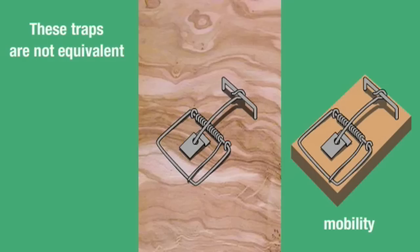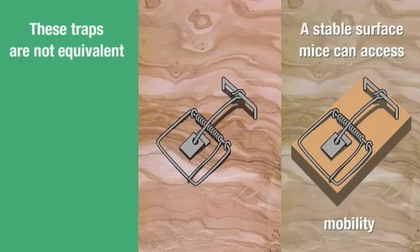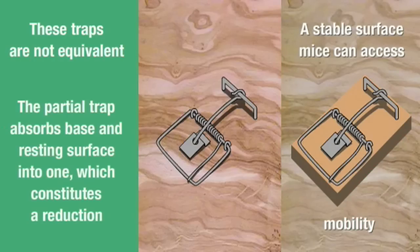An unstated requirement of the standard base is that it rests on another surface. Not just any surface, but a stable surface mice can access. A partial trap fixed directly to that surface absorbs two elements into one, which is a reduction.